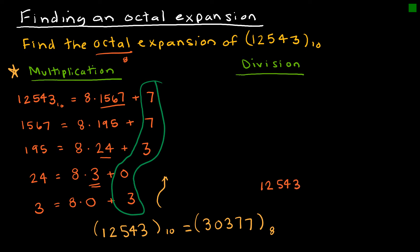I'm going to write my 12,543 and I'm going to divide by 8. Just as I did before when I divided by 8, I got 1,567 with a remainder of 7. Then I'm going to divide by 8.